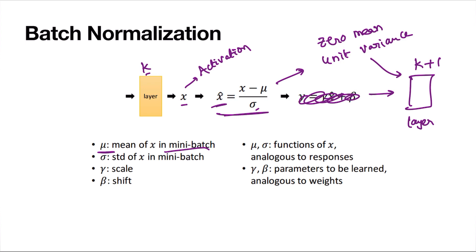I am saying mini-batch here. For a single node in a layer, the activation is a single value per sample. To calculate a mean, we need multiple values — that is what a mini-batch provides. The activation x has multiple values because we process a mini-batch of multiple samples at once.